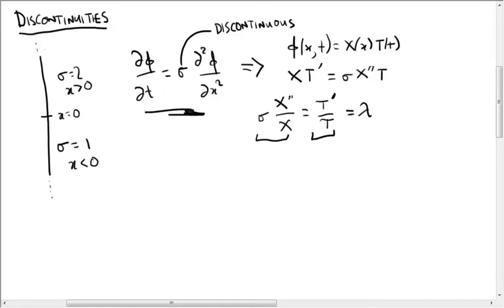Right, so as usual this implies T is e to the lambda t, maybe times some constant. And X satisfies the following equation.